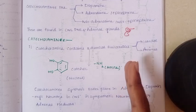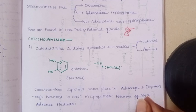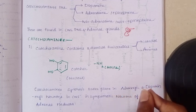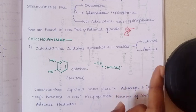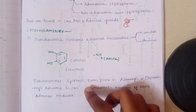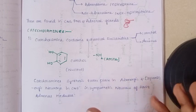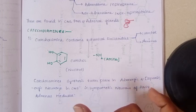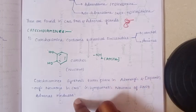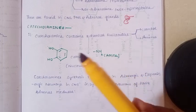For example, in the exam, you may be asked to write a note on biosynthesis of catecholamines or catabolism of catecholamines. It is definitely an important question, so make sure to read it carefully. First thing in medicinal chemistry: you need to know the structure. If you have the structure, you can identify the compound.